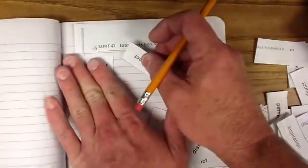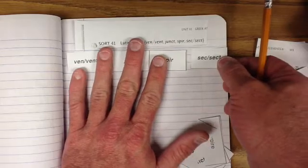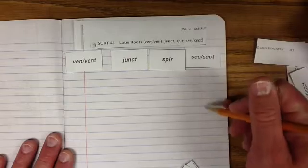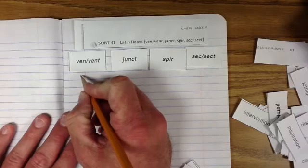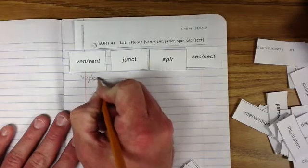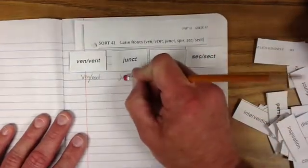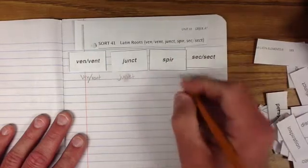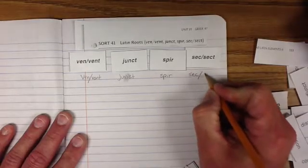Is that like junk? I don't know, I guess we'll have to find out, won't we? We've got spir, we've got sect or sect. You know, I usually like you to keep this in with this red line here, but it looks like we've got too many of these today, so let's write these down. We've got ven slash vent. We've got junct. Ooh, look at that. Can't even spell that right. So I hope you're using this time to make sure that you're getting your words in. Sect and sect.